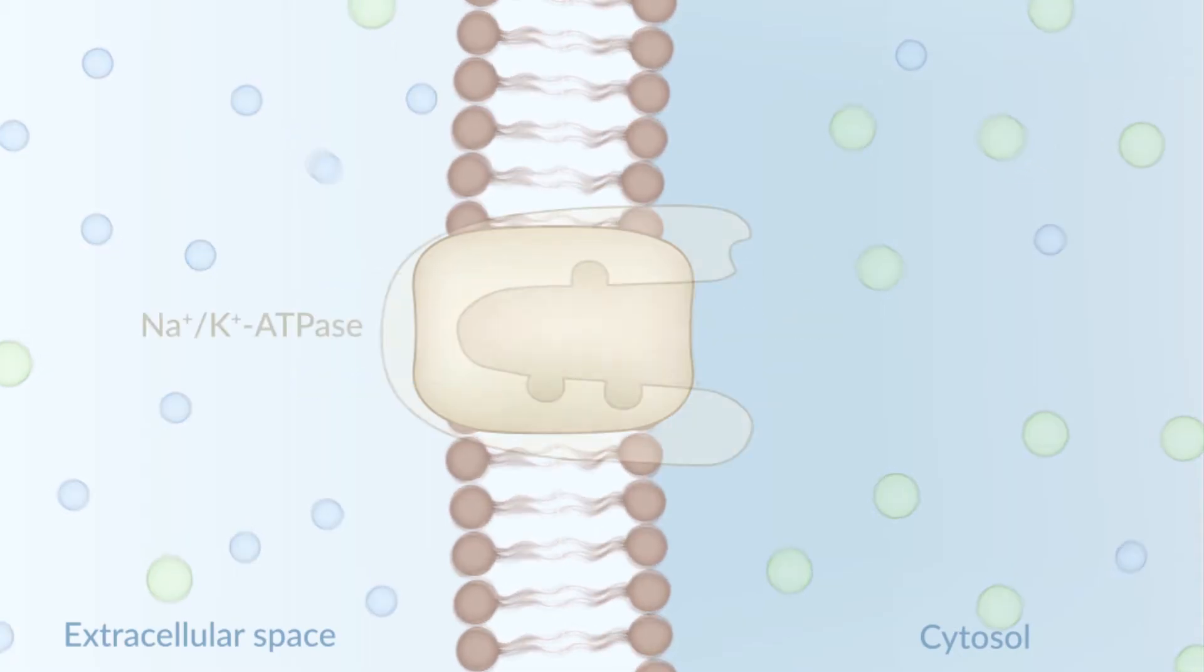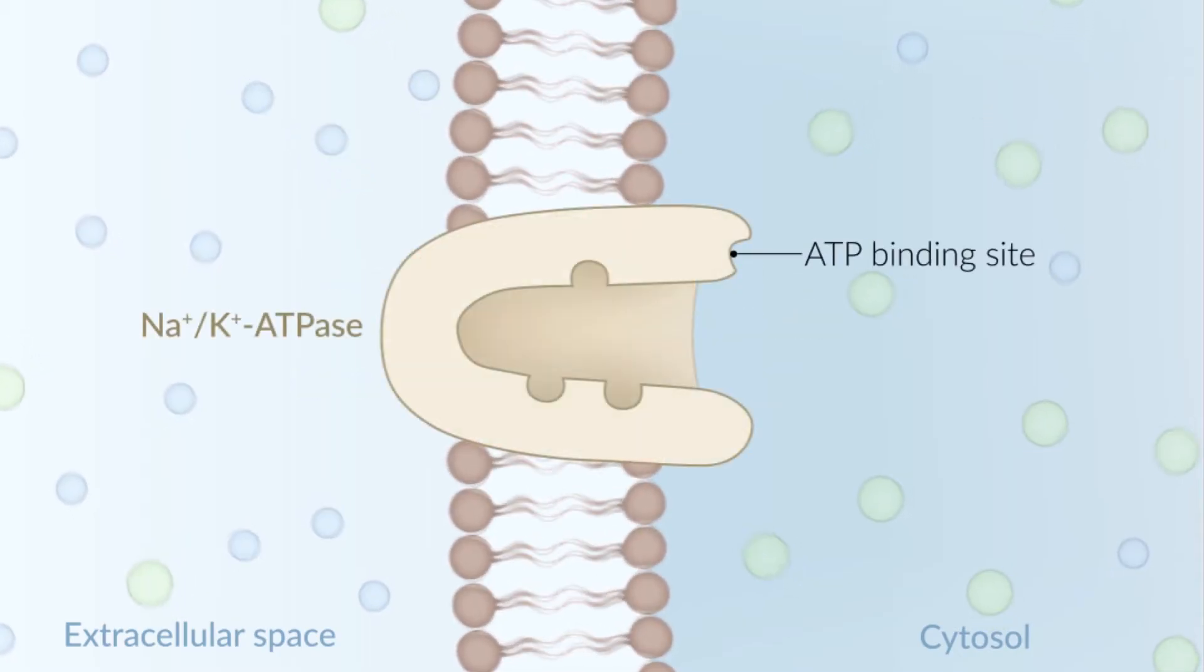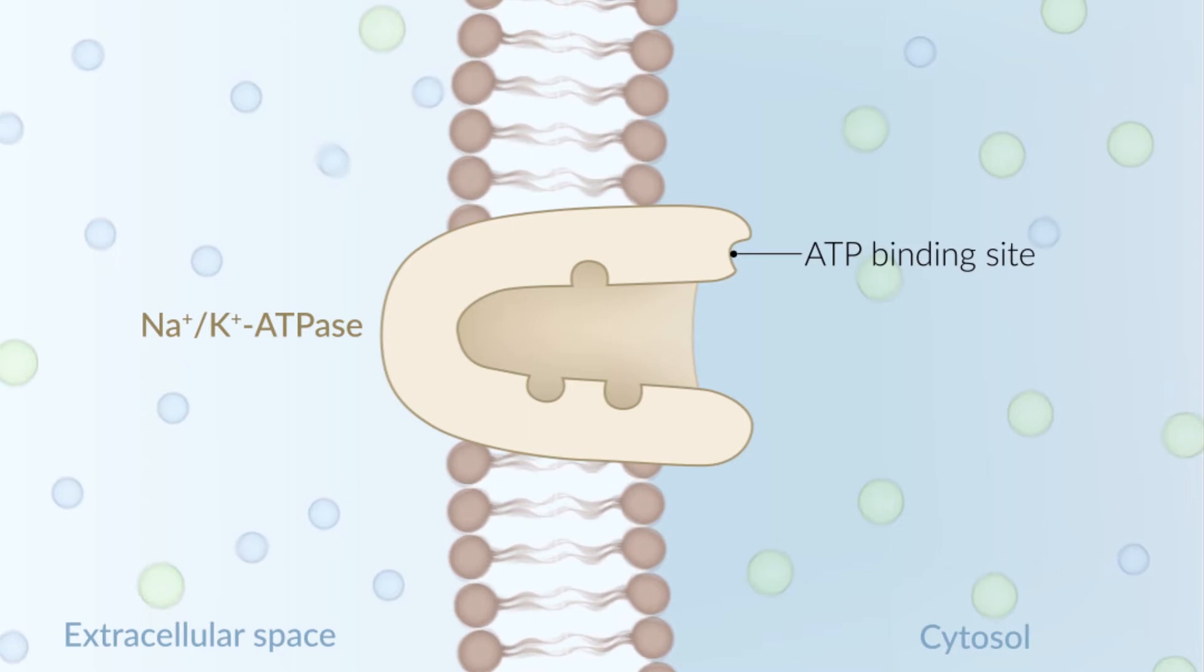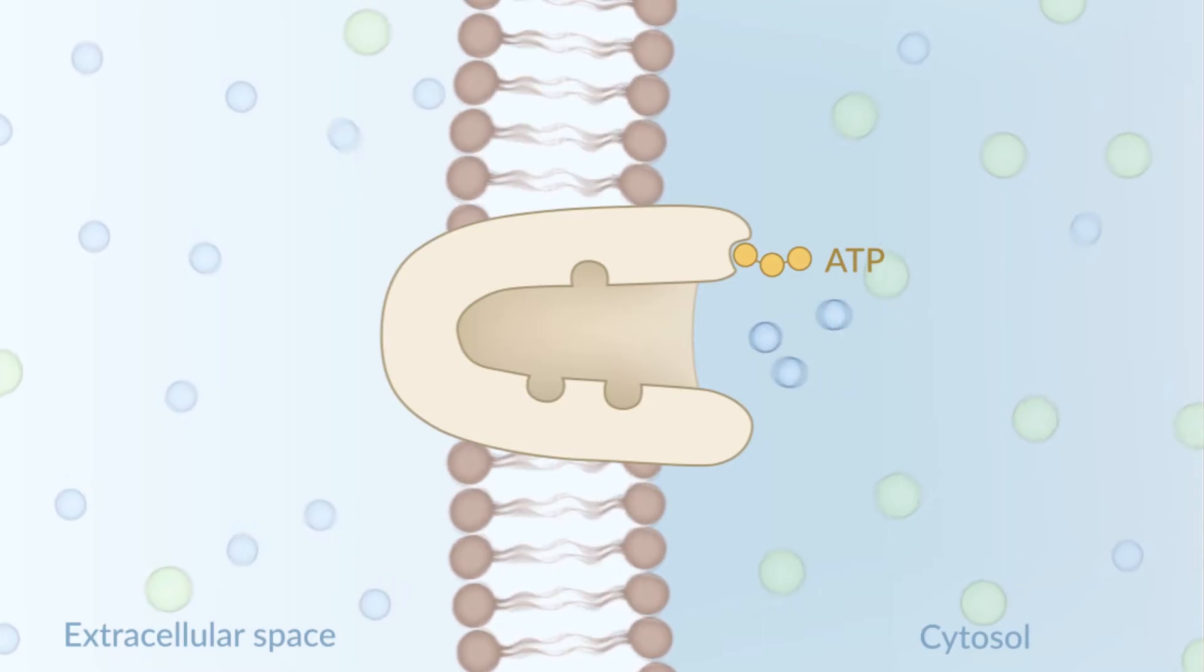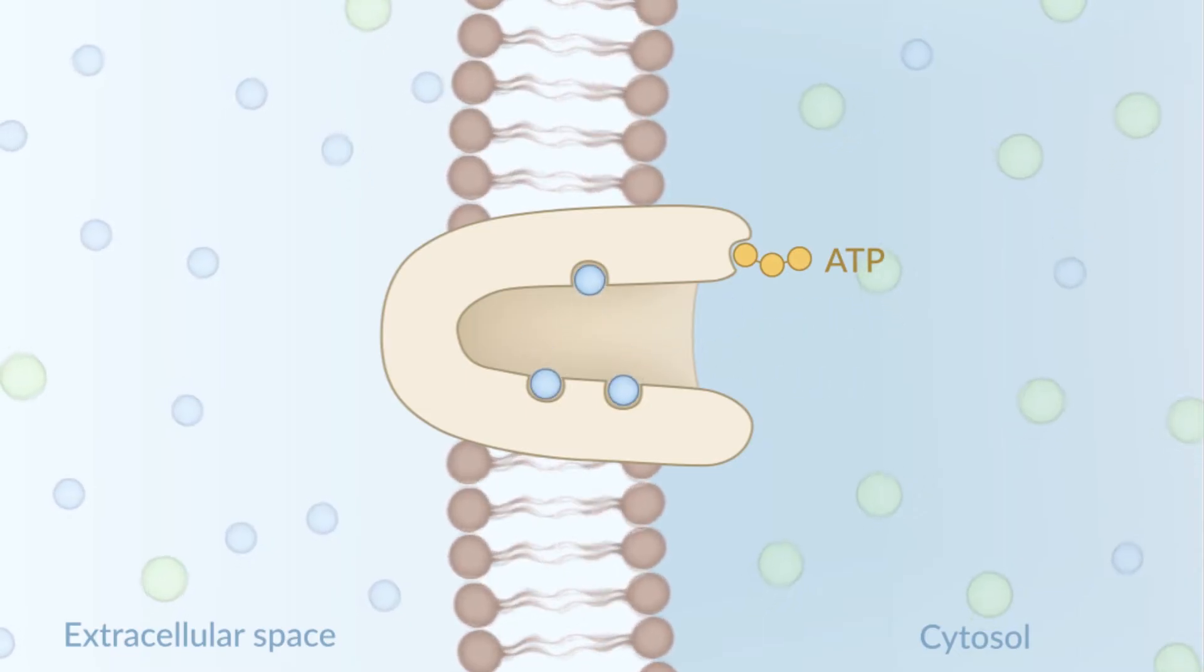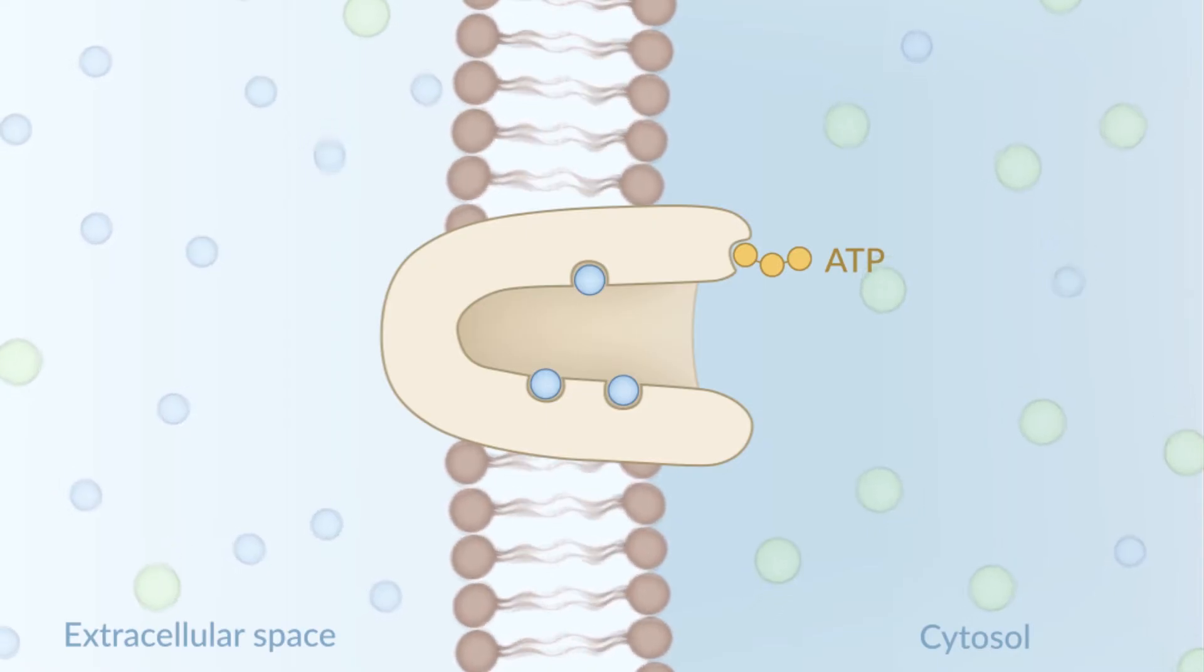Sodium potassium ATPase has an intracellular ATP binding site. If ATP binds here, the protein's conformation opens up to the cytosol, eventually taking in three sodium ions. The protein changes its conformation and closes at the intracellular side.